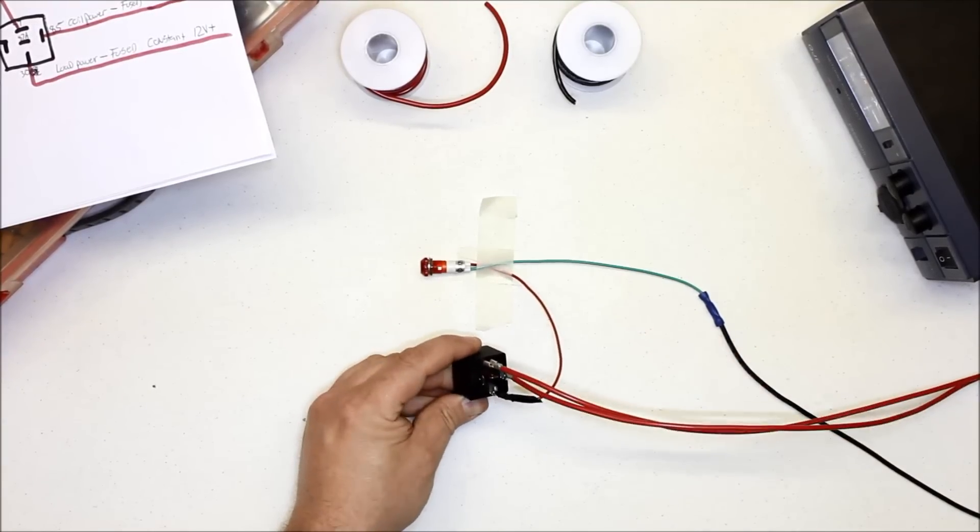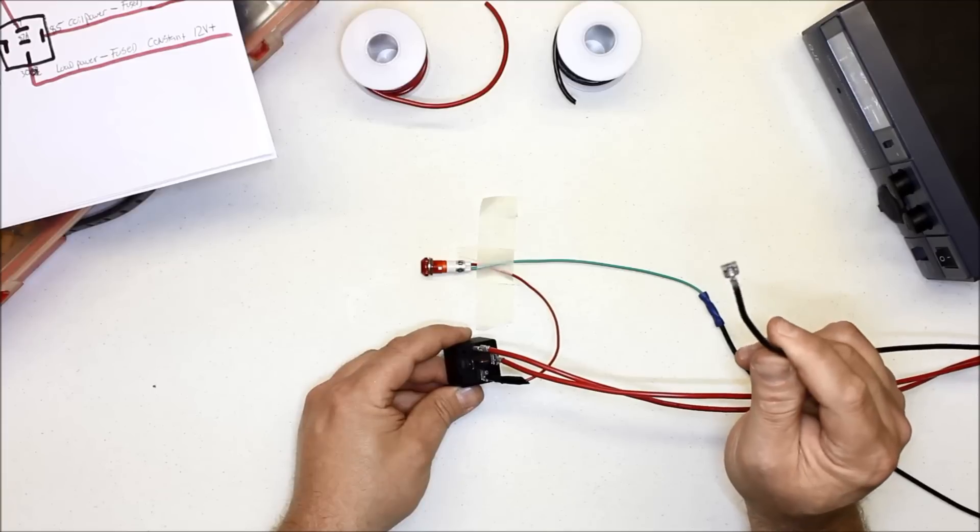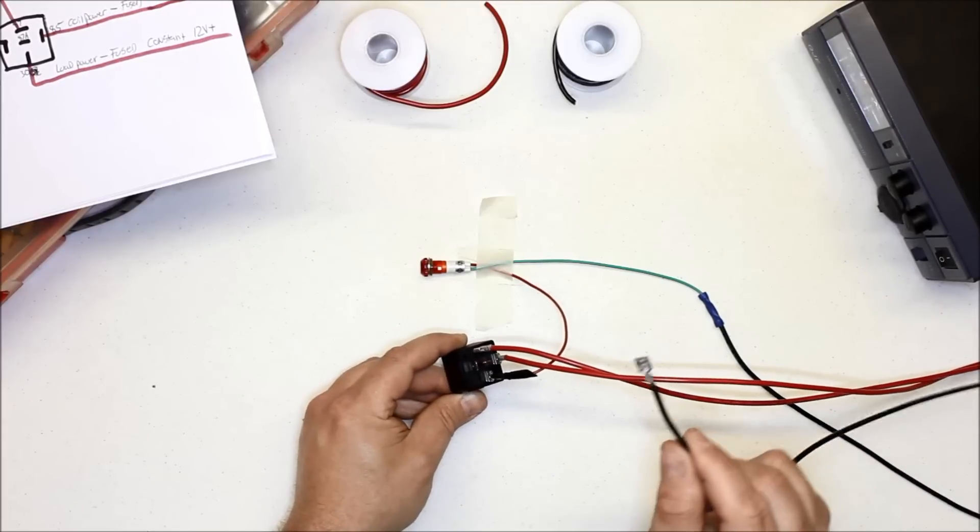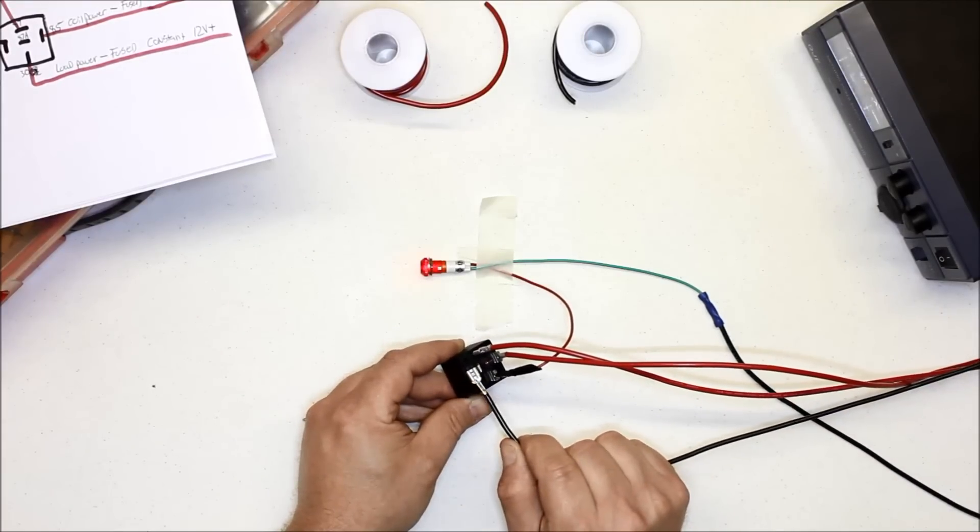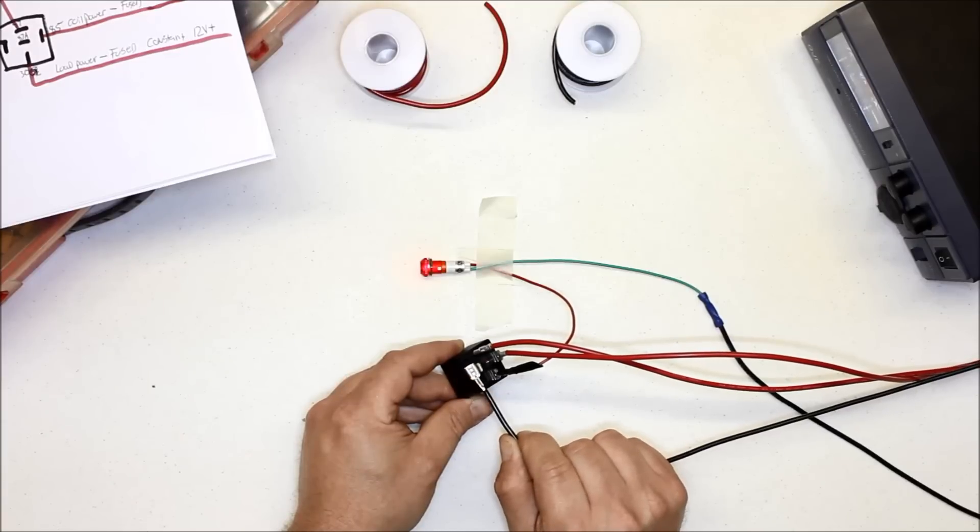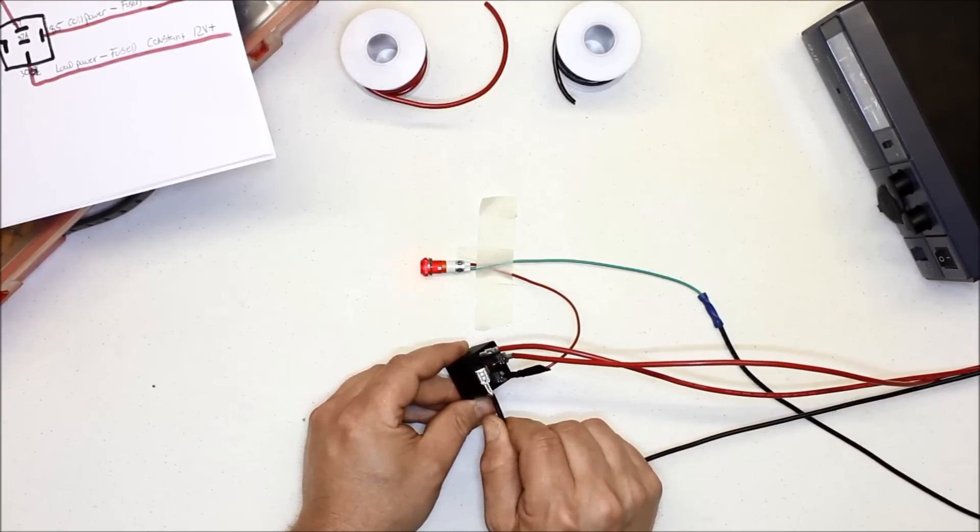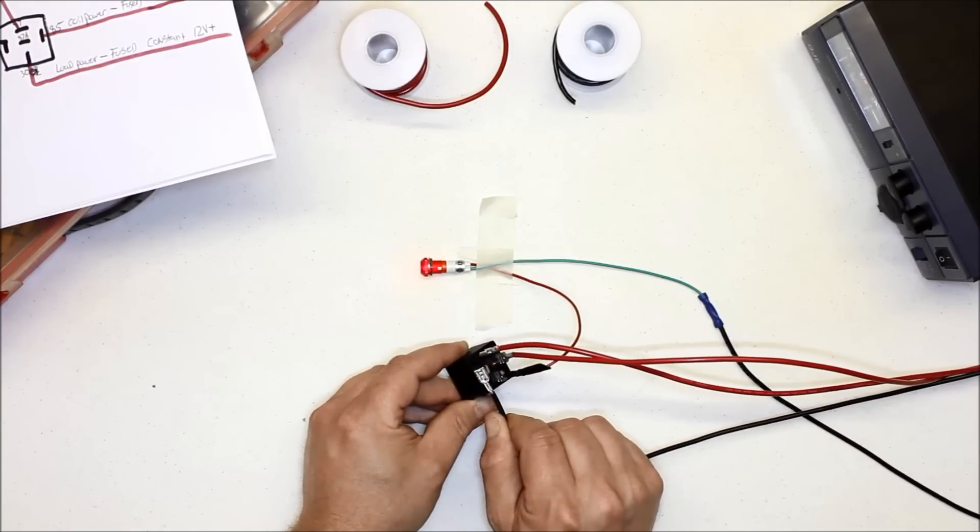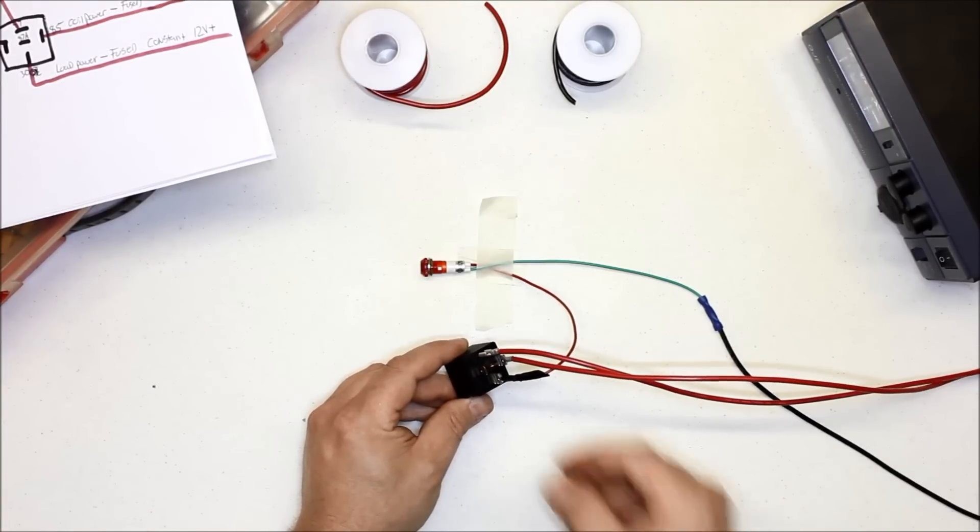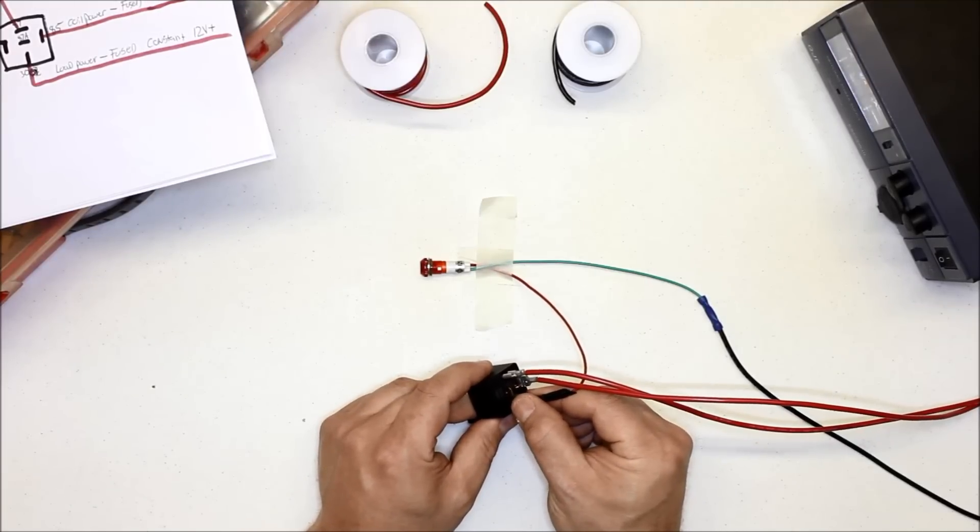Here is your negative from that aftermarket alarm or remote start box. This is your output. So we are turning the relay on and off with the negative, but it's actually switching 12 volt positive to the load. In this case, for the example, it's a light. Hopefully you can see that with the bright lights on—that LED lights up. That's just a basic way to use a negative output to power a positively switched accessory in a vehicle.